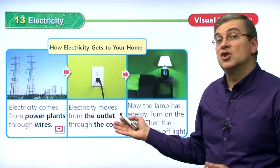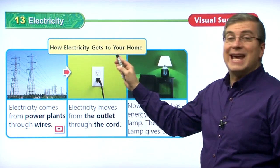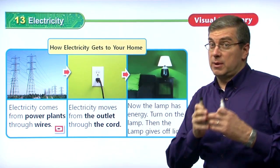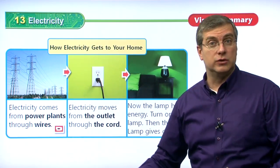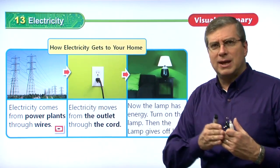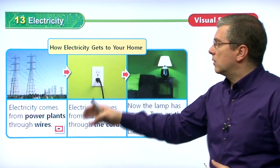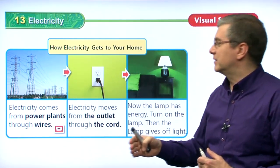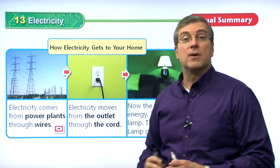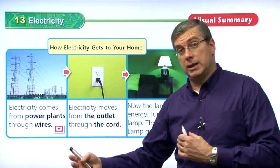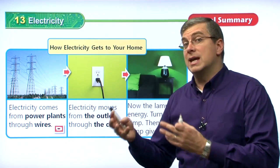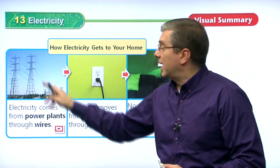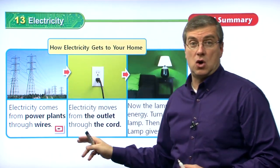Let's take a look at a chart. This chart shows how electricity gets to your home — how electricity gets from the power plant to your home so you can use it. In the first stage, we see electricity comes from power plants — the building where electricity is produced — and it comes through wires to your home.